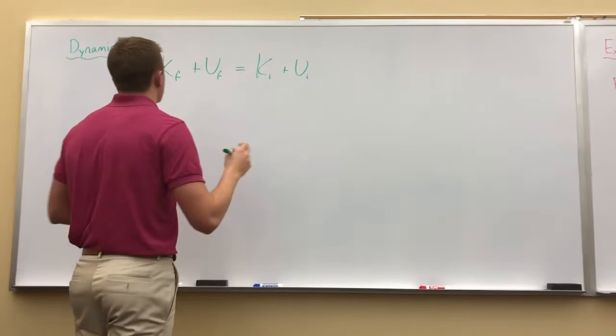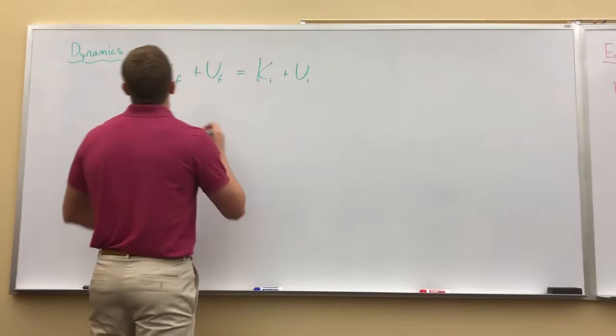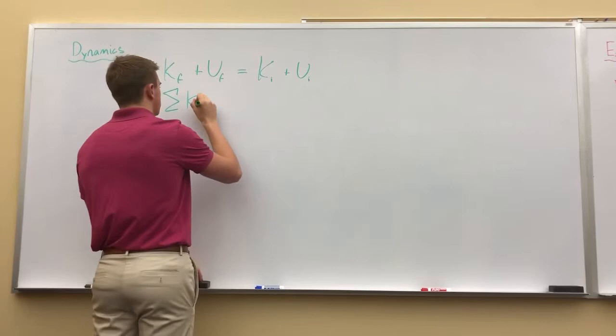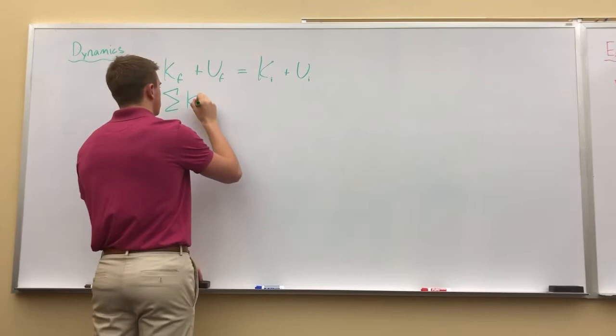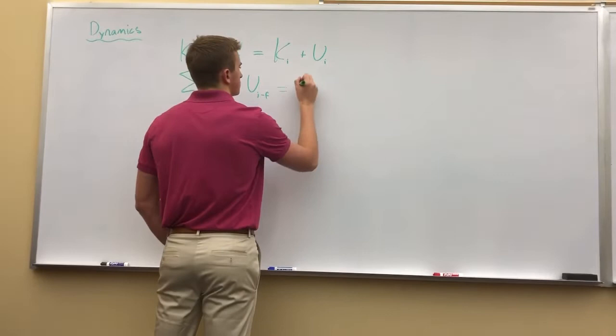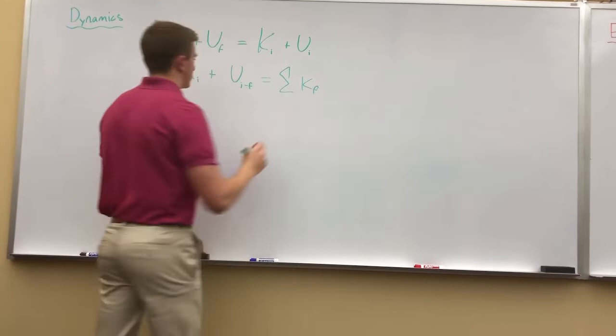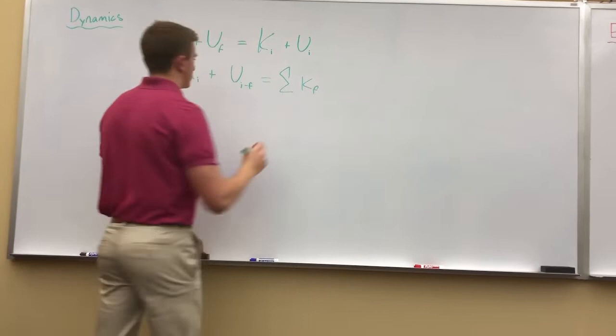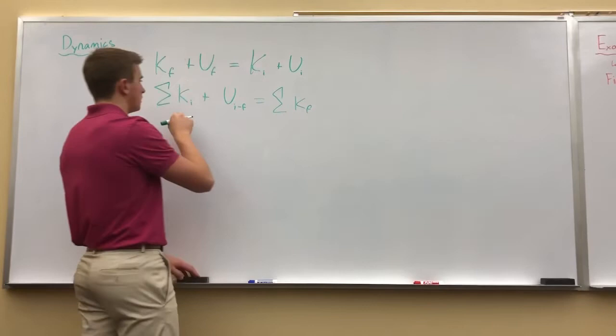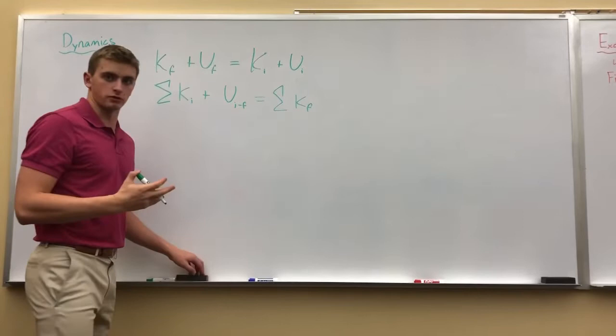We can boil that down and rewrite that into the summation of our initial kinetic energy plus the difference between our potential energy initial minus our final is equal to the summation of our final kinetic energy, which you might also see as K1 plus U1 minus 2 is equal to K2, or T1 plus V1 minus 2 is equal to T2. All sorts of different ways of writing this.